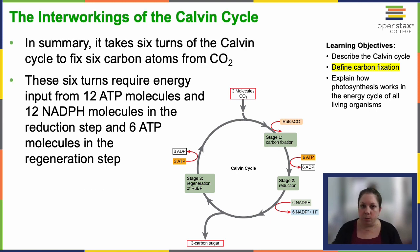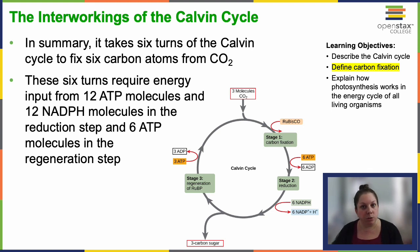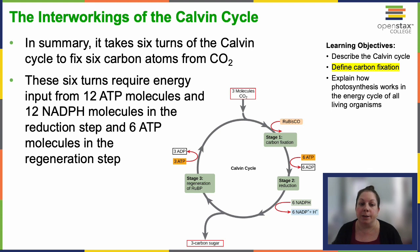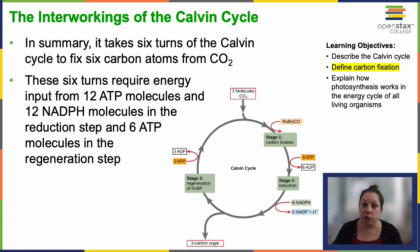So let's summarize that. To fix six carbon atoms from CO2 requires six rounds of the Calvin Cycle — six turns of the wheel — along with energy input from 12 ATP molecules and 12 NADPH molecules during the reduction stage, and six ATP molecules during the regeneration stage.